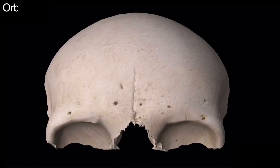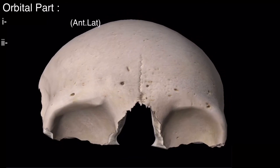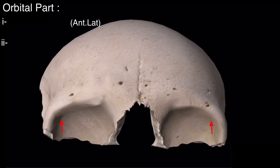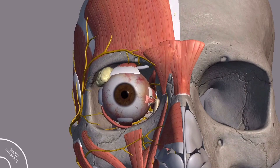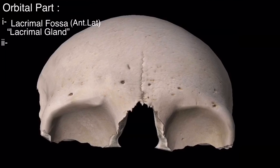In the orbital part of the frontal bone there are two depressions. The first is on the anterolateral side, called the lacrimal fossa, and in the lacrimal fossa is present the lacrimal gland, as you can see in this model.